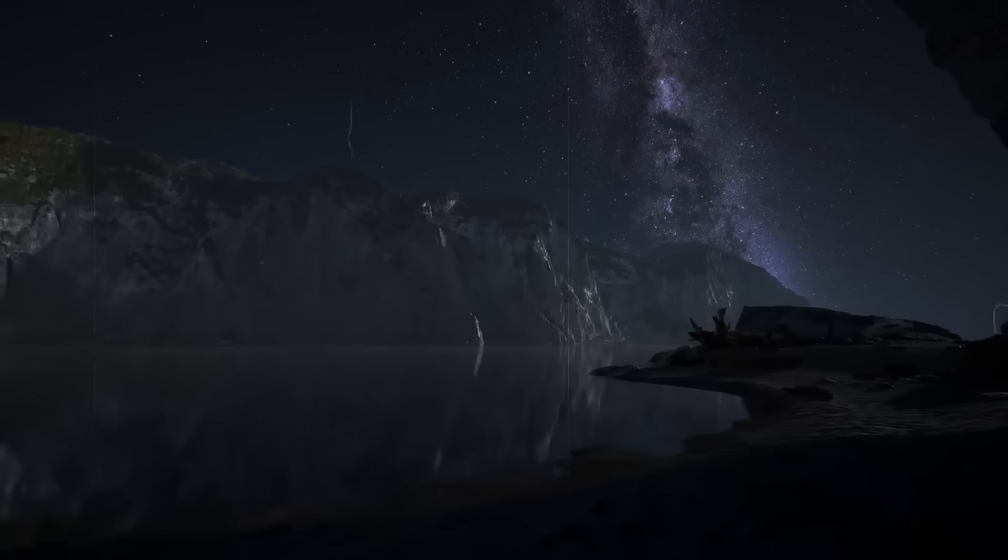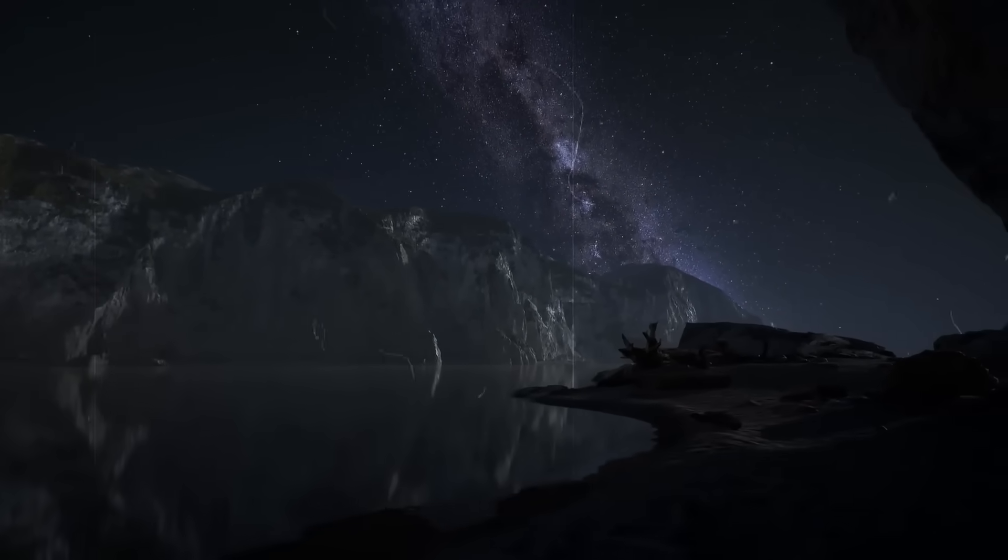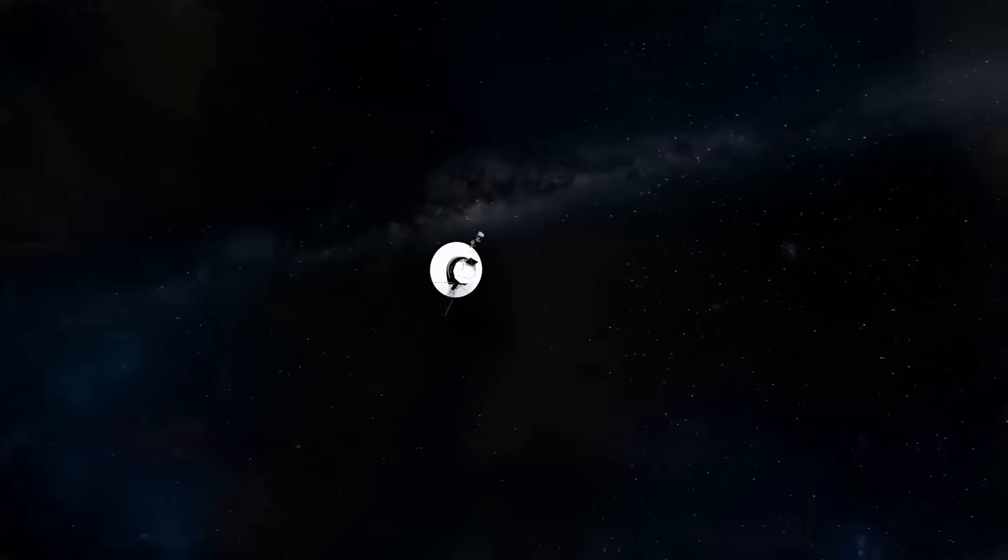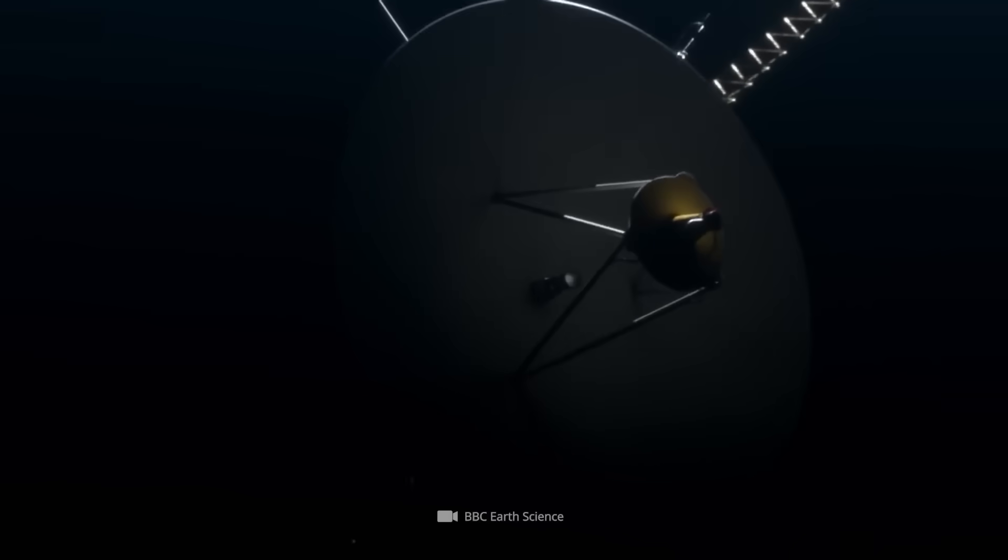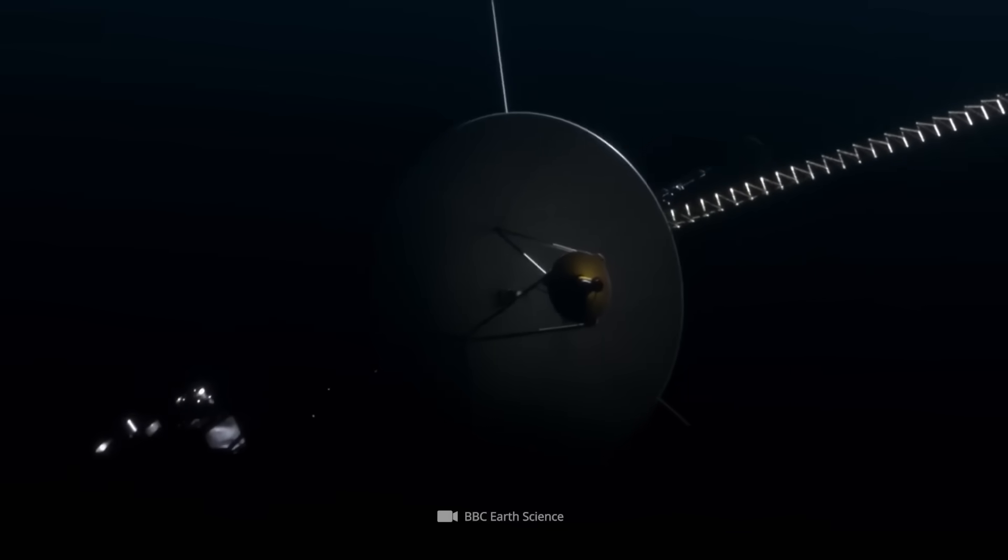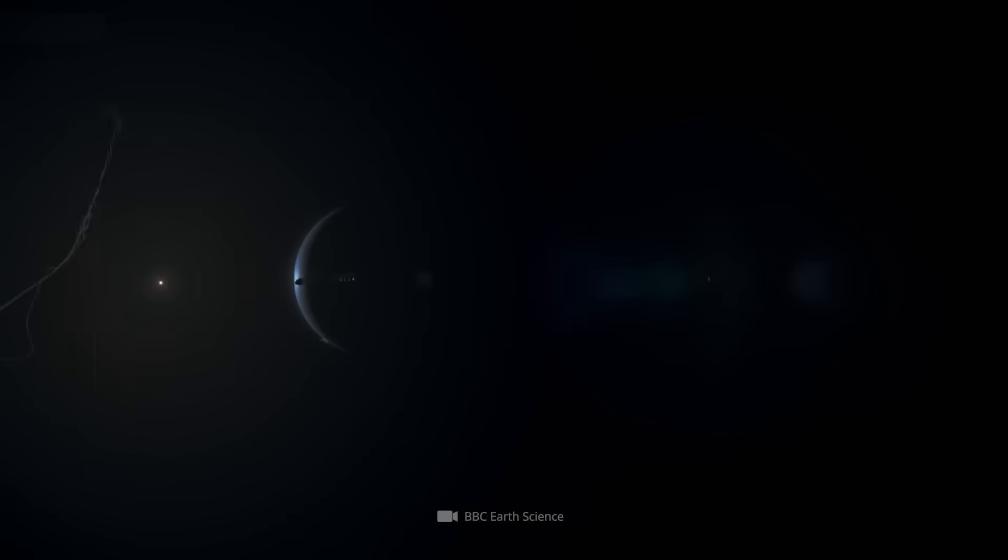Somewhere beyond the outer edge of our solar system, 14 billion miles from Earth, an aging spacecraft drifts through the dark, silent abyss. Voyager 2, a relic from the 1970s, a machine so distant its signals take over 18 hours to reach us.